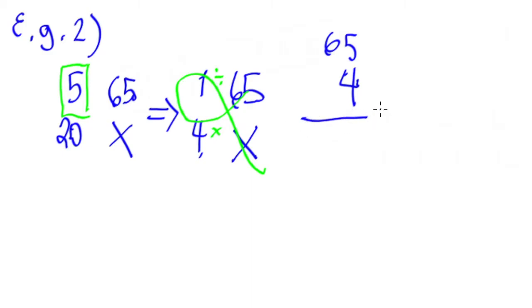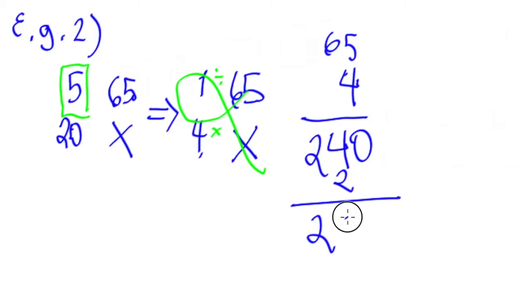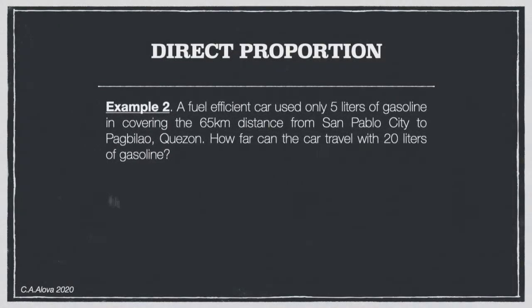Multiplying 4 times 65: 6 times 4 is 24, 5 times 4 is 20, giving us 260. So 5 liters is to 65 kilometers as 20 liters is to 260 kilometers. The answer is 260 kilometers.